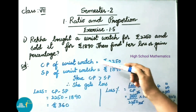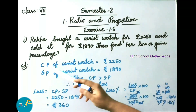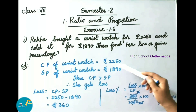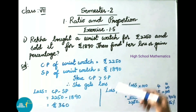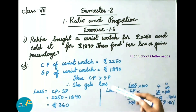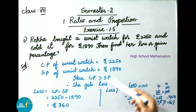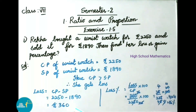For 1890 rupees. Find her loss or gain percentage. Solution: cost price of wristwatch is 2250 rupees, selling price is 1890 rupees. Here cost price is greater than selling price, so she gets a loss. Loss equals cost price minus selling price, that is 2250 minus 1890 rupees, which gives 360 rupees. Therefore Reka got a loss of 360 rupees.